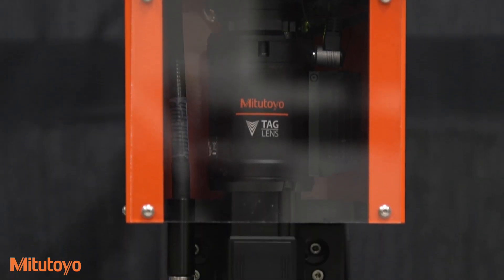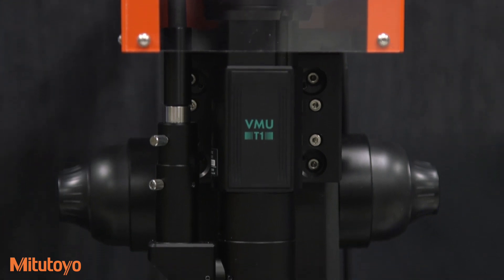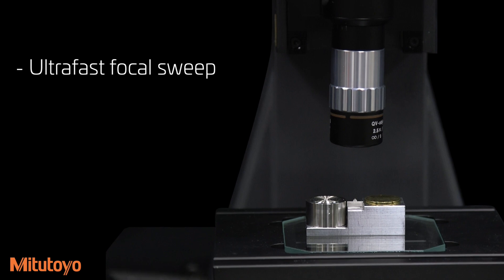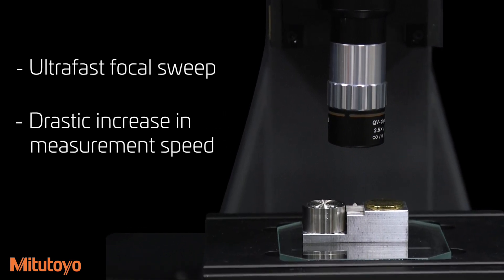Mitsutoyo's tag lens makes the new high-speed PFF possible by sweeping the focus of the optical system at 70,000 Hz. This ability to do an ultra-fast focal sweep provides a drastic increase in measurement speed compared to traditional solutions which need to physically move the optical system or the part.